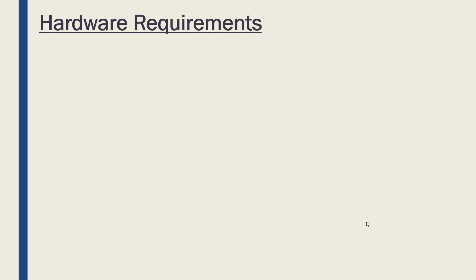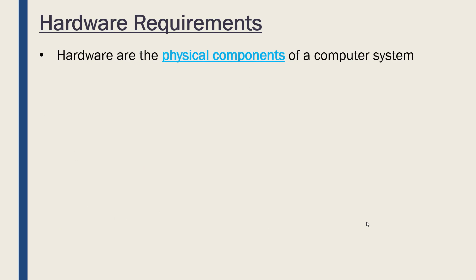Let's talk about each of these three. As we go through, think about evaluation because we can use the points here to help evaluate our methods. First of all, hardware requirements. Hardware consists of the physical components we can touch of a computer system — so the screen, the computer, the cable, etc.